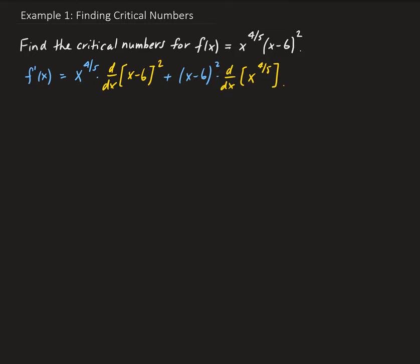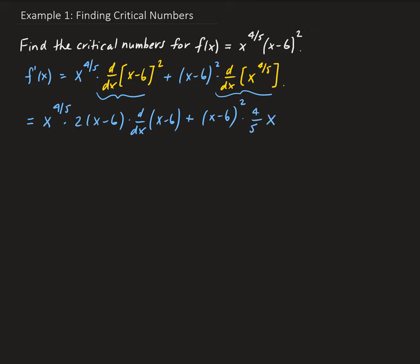Go ahead and take the derivatives of those components. We get x to the four-fifths times 2 times (x minus 6) to the power 1, using the chain rule for the inside part, plus (x minus 6) squared times four-fifths times x to the four-fifths minus 1. Simplifying: x to the four-fifths times 2 times (x minus 6), since the derivative of (x minus 6) is just 1, plus (x minus 6) squared times four-fifths times x to the negative one-fifth.